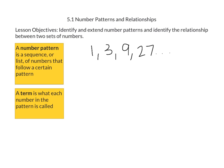So 1, 3, 9, 27 would be an example of a number pattern. Each number in the pattern is called a term. So in our example, the first term is 1, the second term is 3, the third term is 9, and the fourth term is 27.